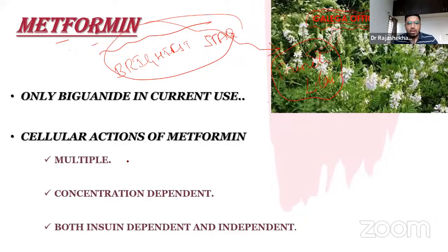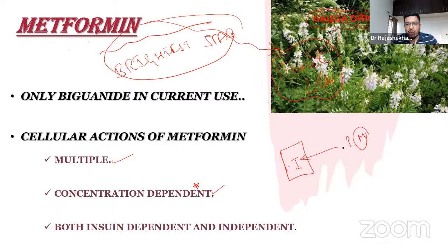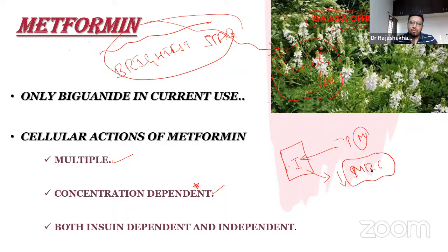The cellular actions of metformin are multiple and concentration-dependent. At very high concentrations, metformin suppresses the mitochondrial respiratory chain, which is critical for ATP production. When ATP production is hampered, the cell switches to anaerobic metabolism, generating large amounts of lactate — which is the mechanism behind metformin-associated lactic acidosis.